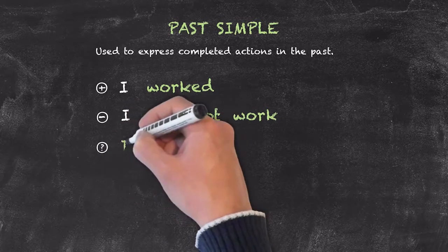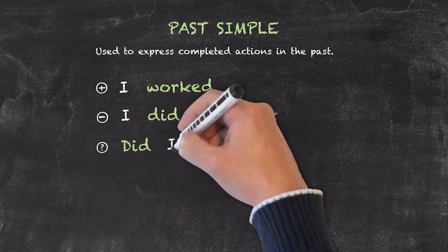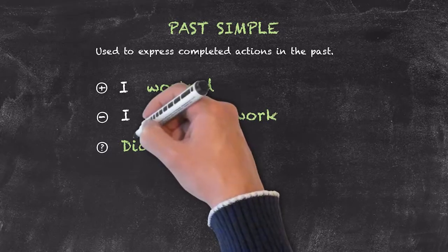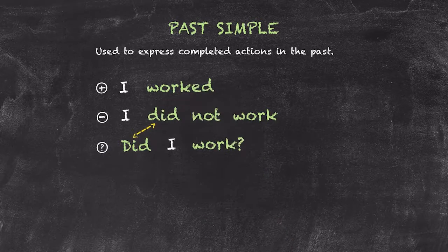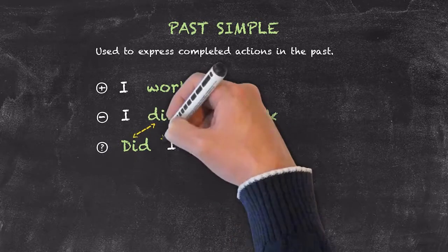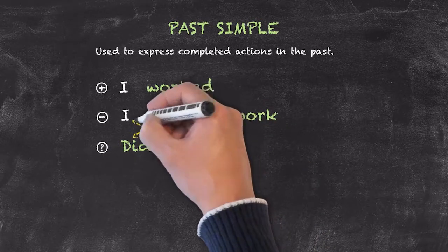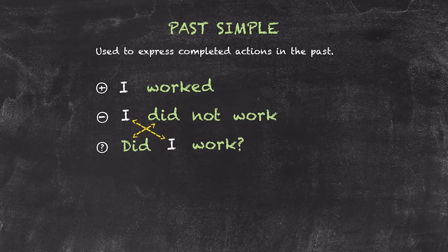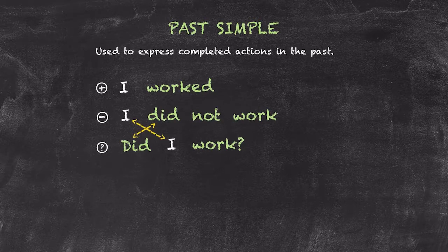Here we have did I work. Again, you can see the inversion of the position of the auxiliary verb and the subject to help us create our question. When we use did, we can use it for any of the subjects in our sentence, from I, or he, or she, etc.